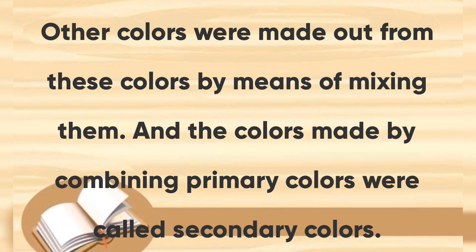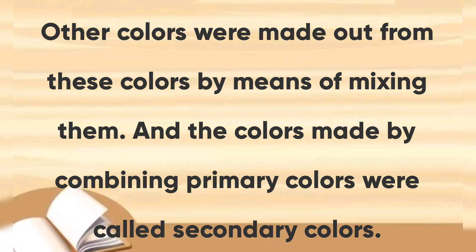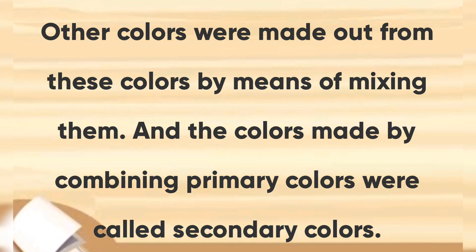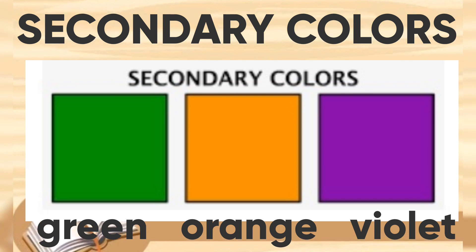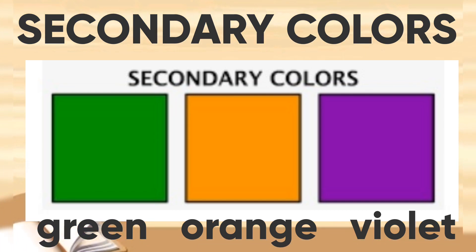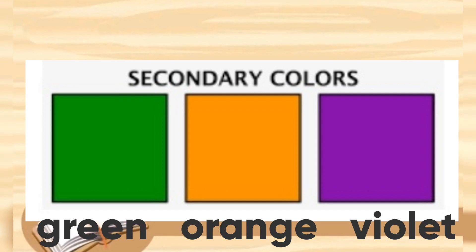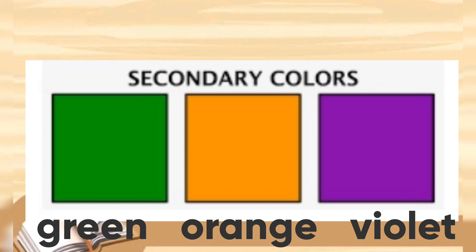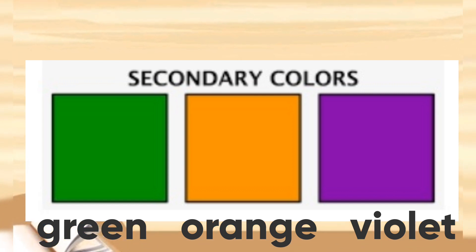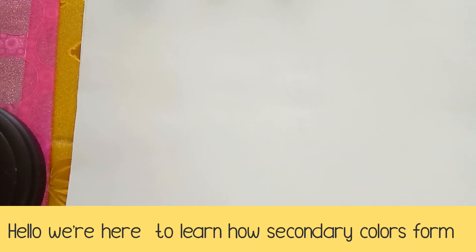The colors made by combining primary colors are called secondary colors. Examples of secondary colors are green, orange, and violet. Today we are going to tackle and explain how these colors form by means of mixing primary colors. Let's start and watch this video.